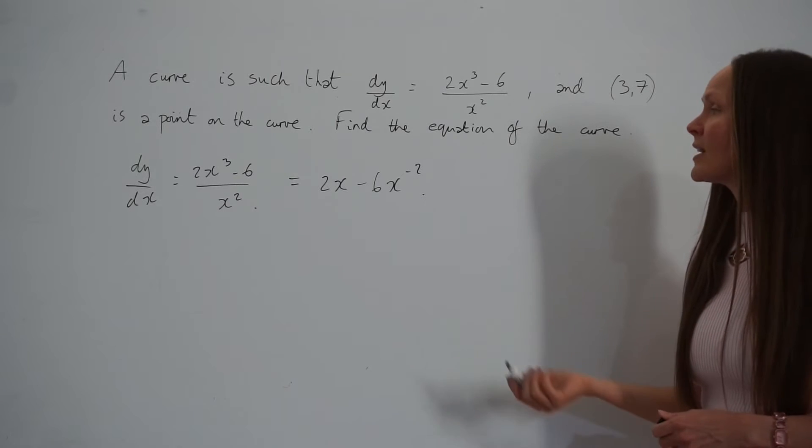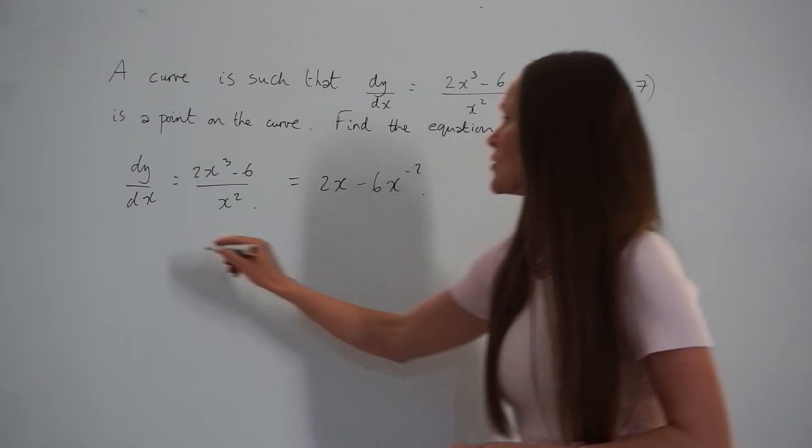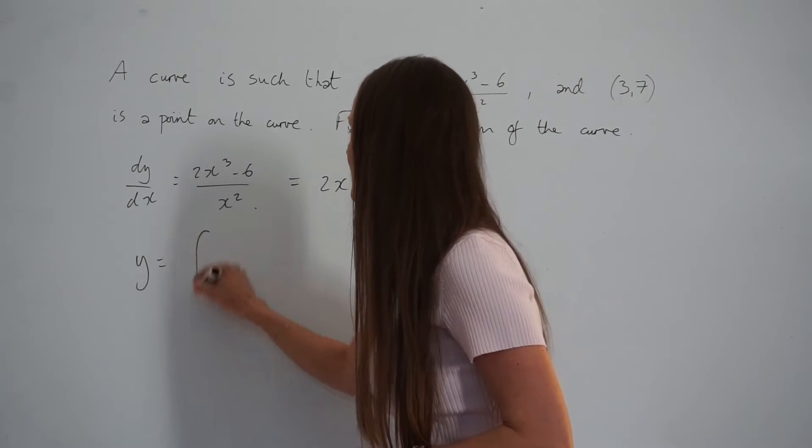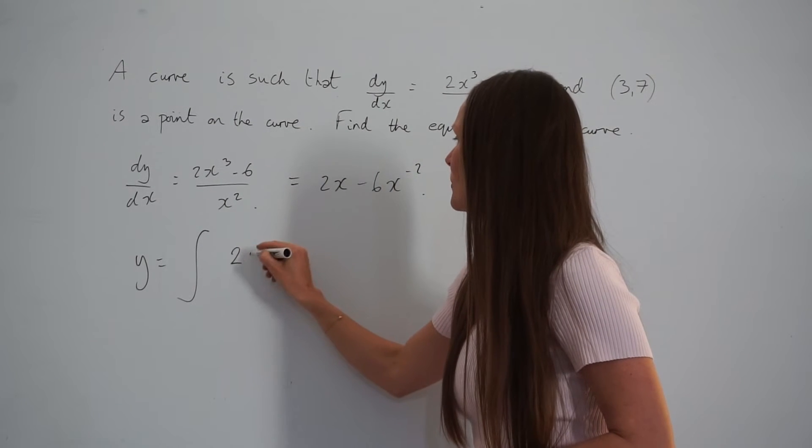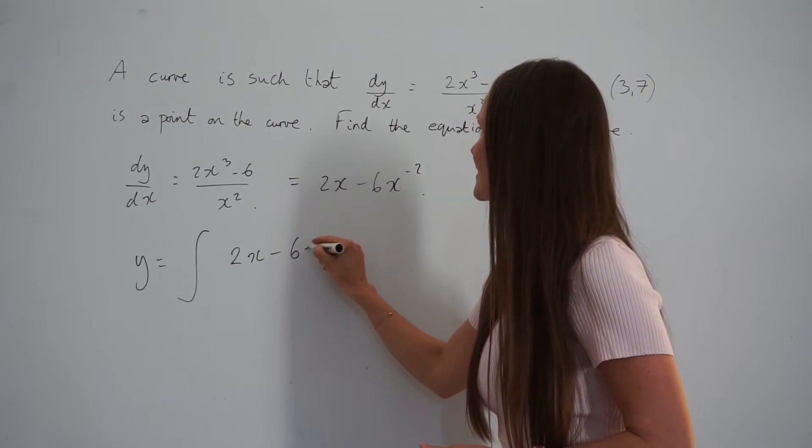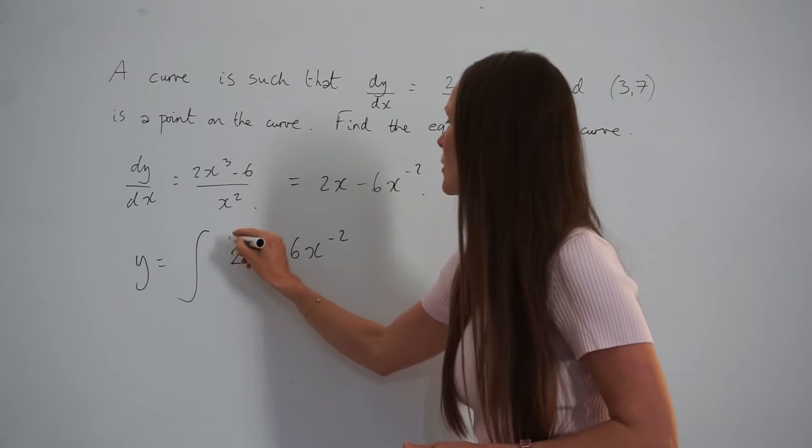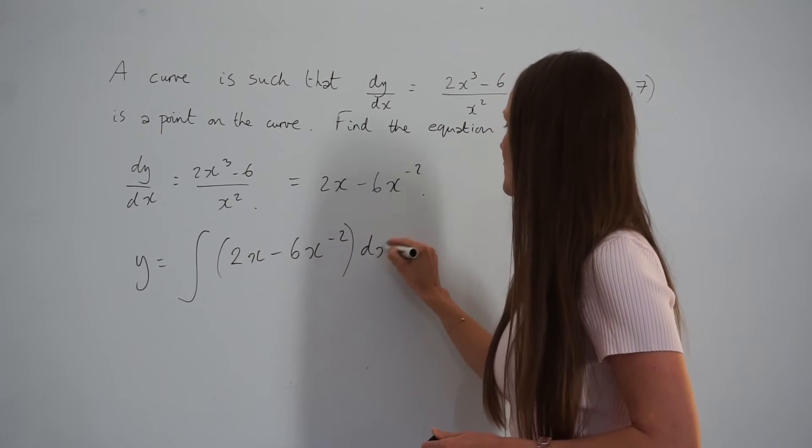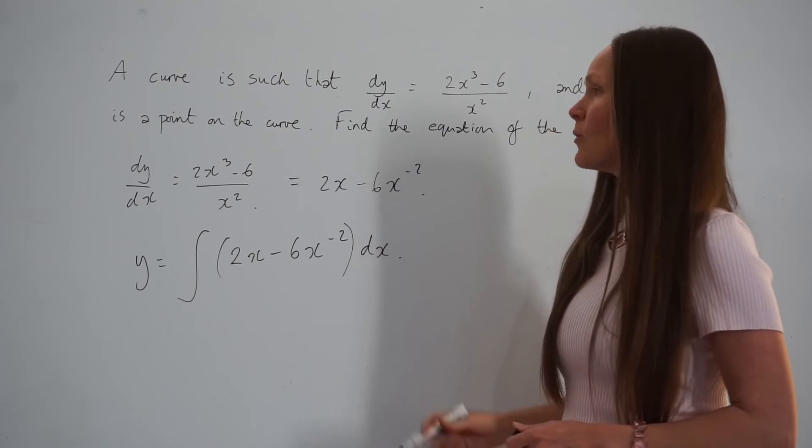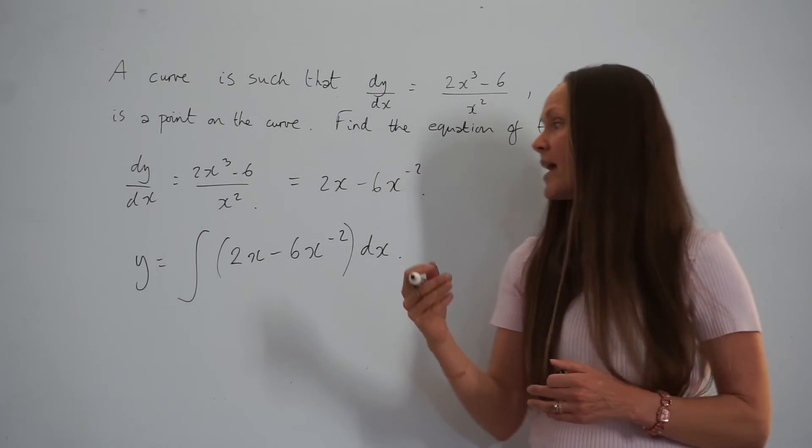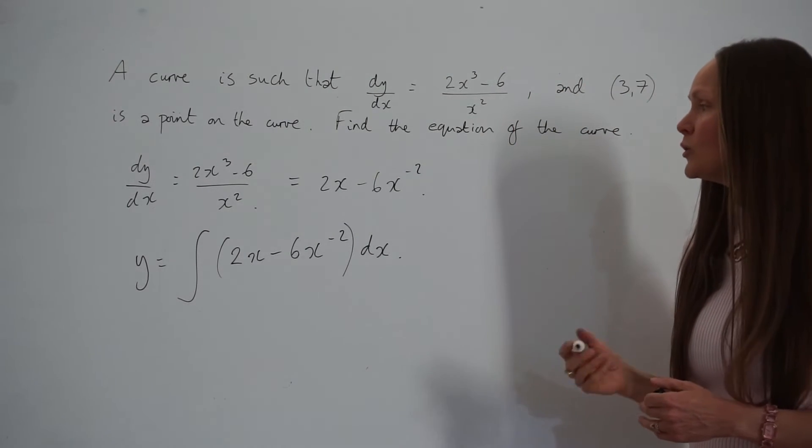Now we're going to find the equation by integrating. So y equals the integral of 2x minus 6x to the power of -2 with respect to x. Remember, you're increasing the power of x by 1 and dividing by the new power.